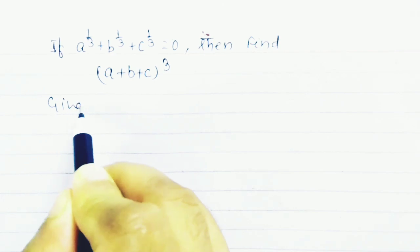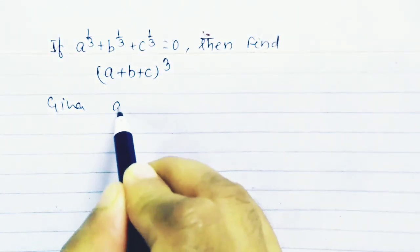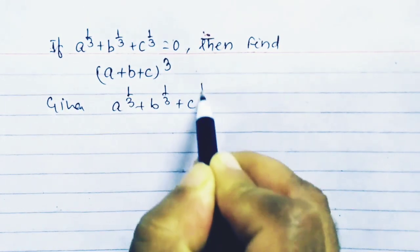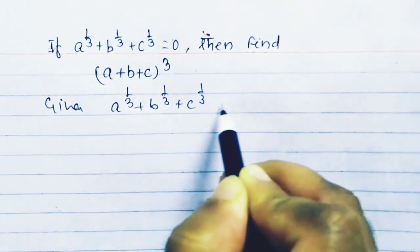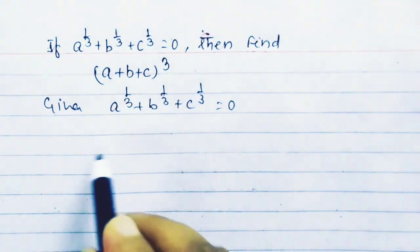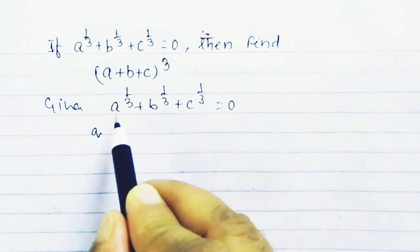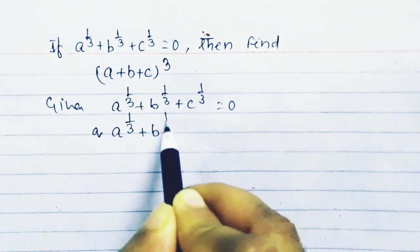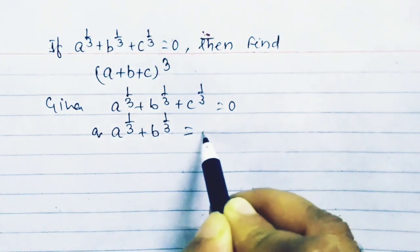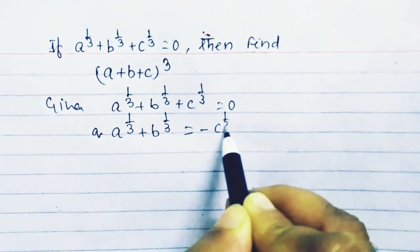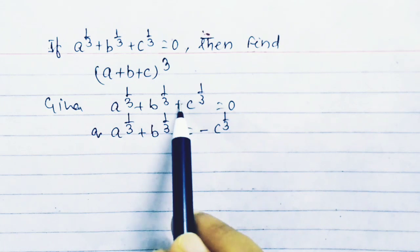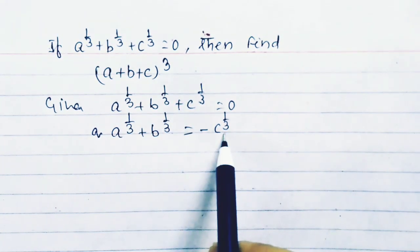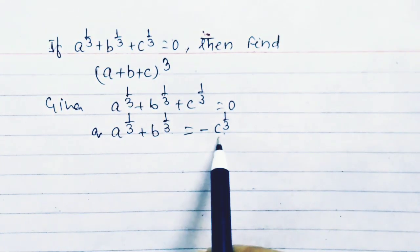It is given that a to the power 1 by 3 plus b to the power 1 by 3 plus c to the power 1 by 3 equals 0. We can write a to the power 1 by 3 plus b to the power 1 by 3 equals minus c to the power 1 by 3, because we are transposing c from the left hand side to the right hand side, that's why it becomes negative.